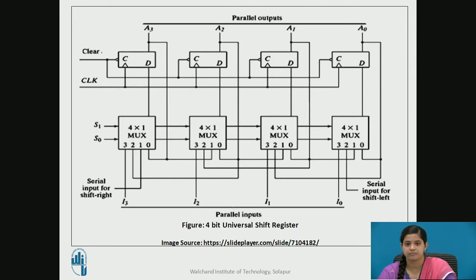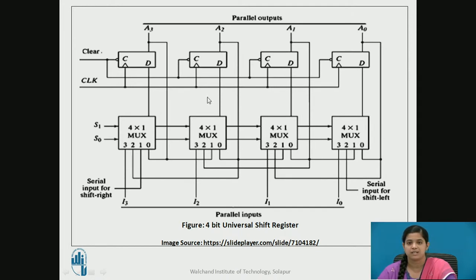This is the logical diagram of a 4-bit universal shift register. Here you can see that 4 D flip-flops are arranged in a specific manner with multiplexers. The design can be realized using 4-to-1 multiplexers. The output of each multiplexer is given to the corresponding D flip-flop. The two select lines, S1 and S0, are common for all the flip-flops.